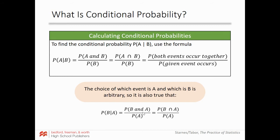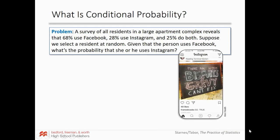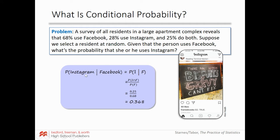From the previous video's survey: 68% use Facebook, 28% use Instagram, and 25% use both. Suppose we select a resident at random. Given the person uses Facebook, what's the probability they use Instagram? The denominator is the probability of Facebook (0.68), and we divide by the probability of both — 0.25. So P(I|F) = P(I ∩ F) / P(F) = 0.25 / 0.68.